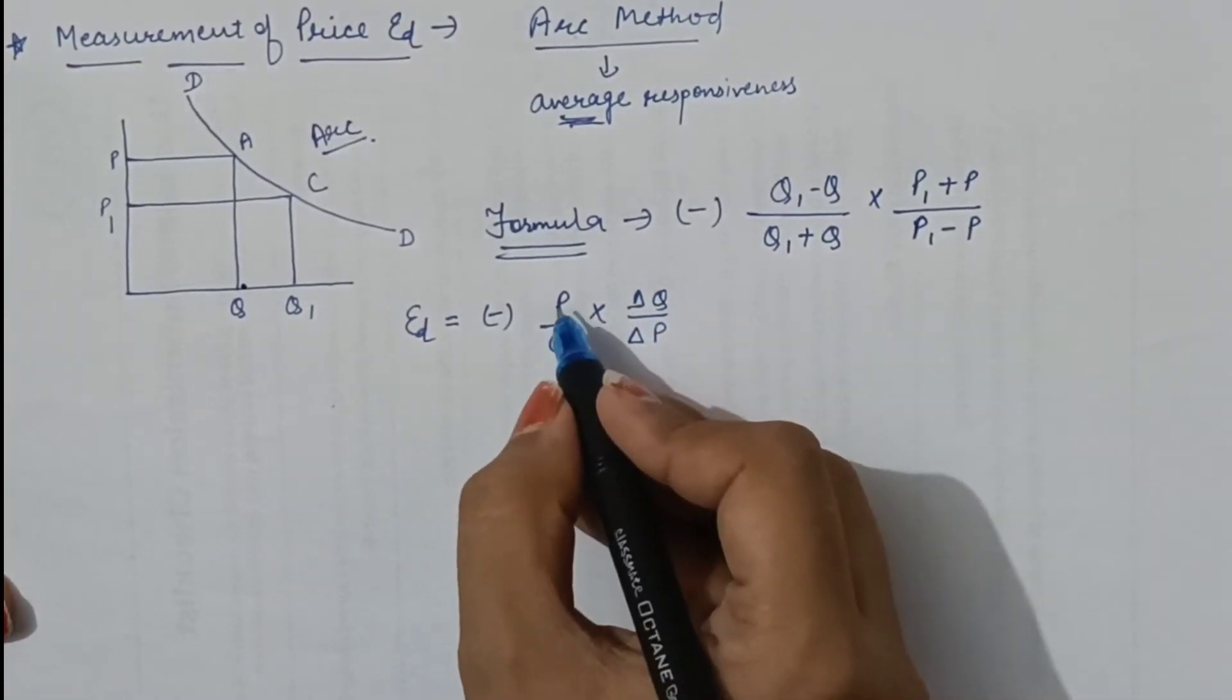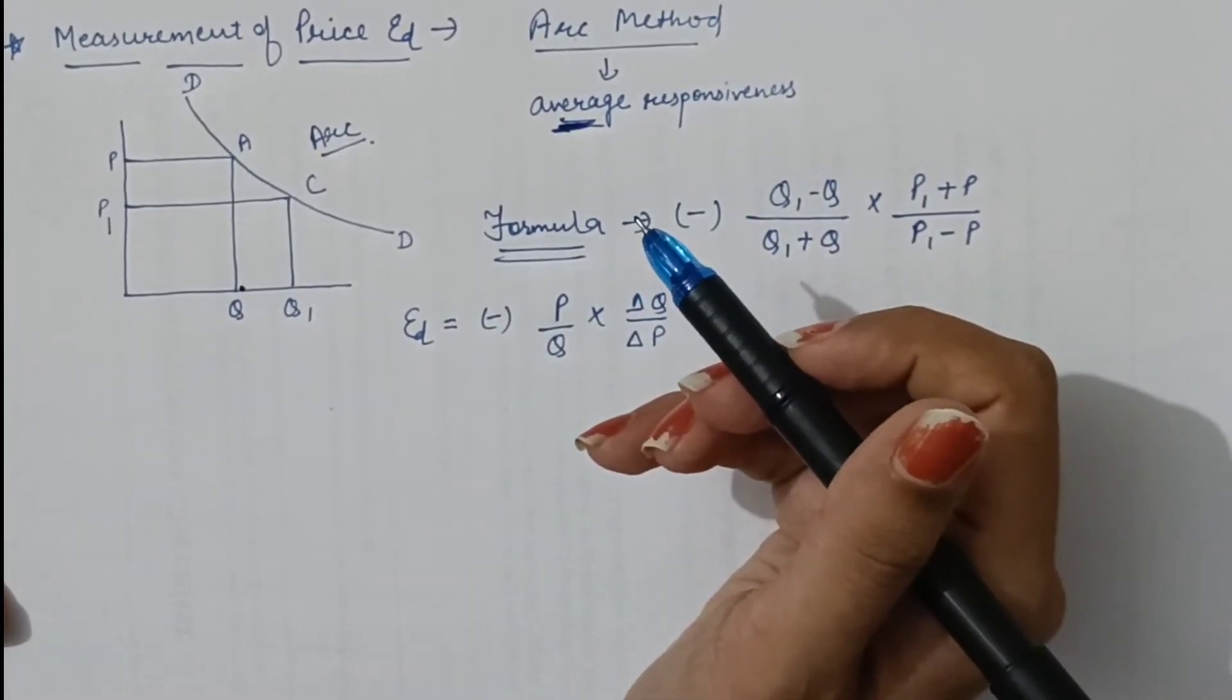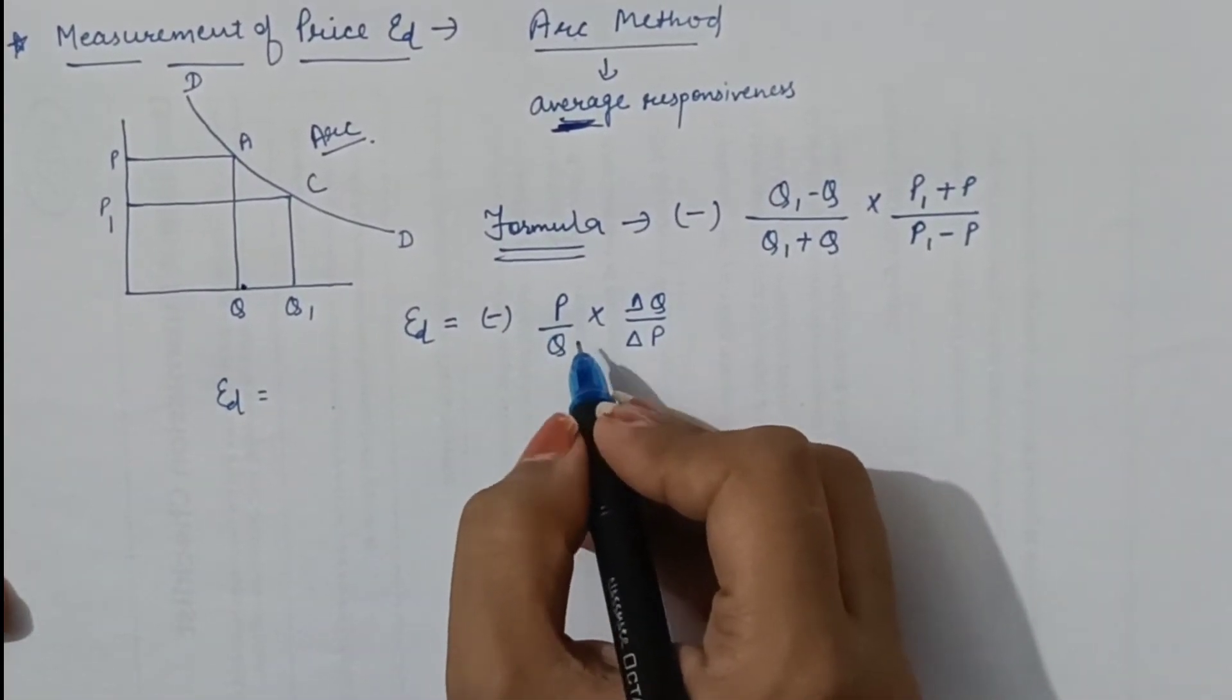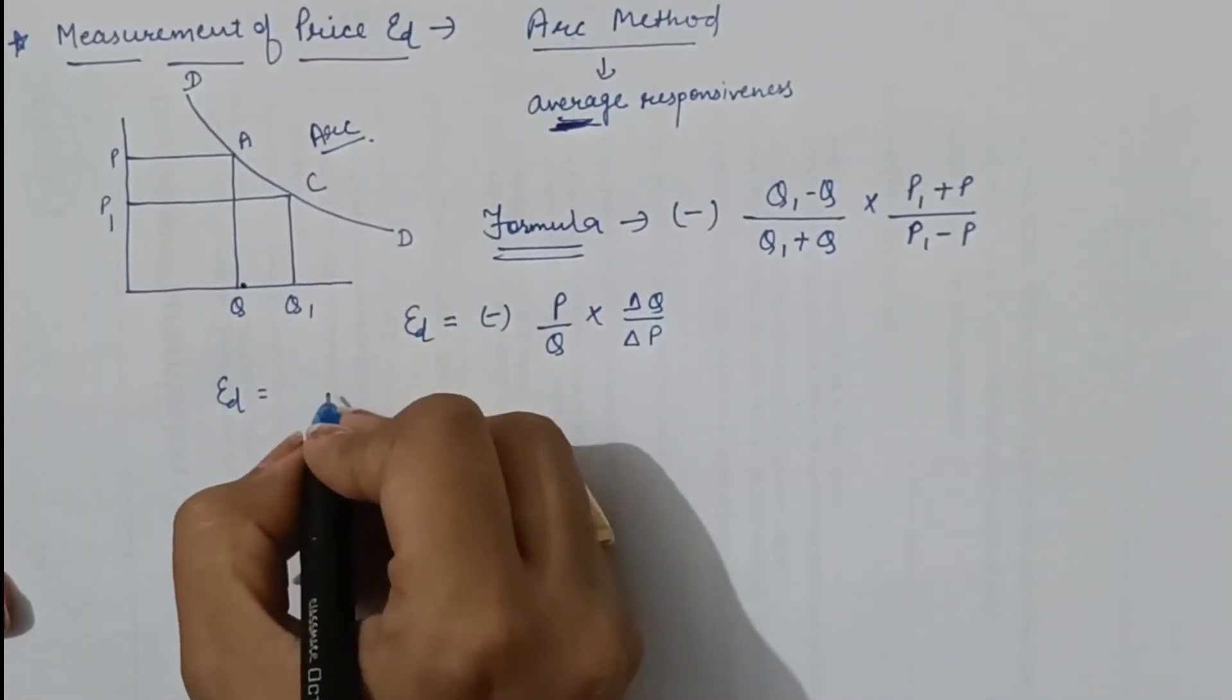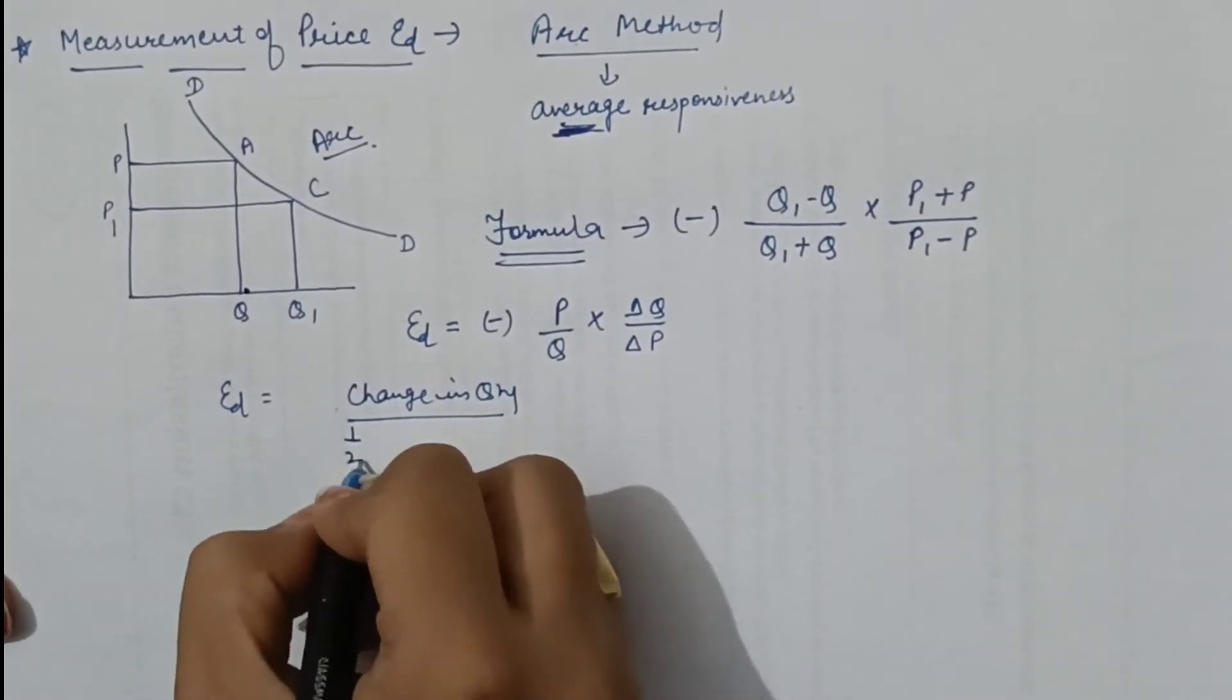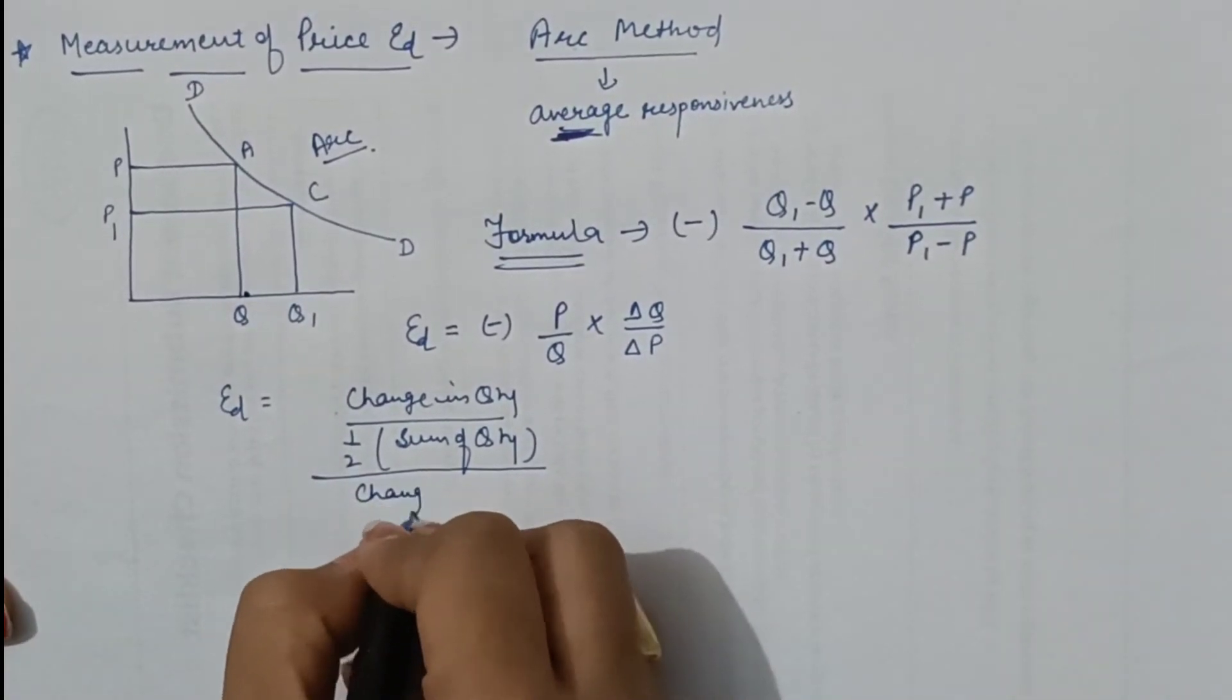But if we take initial price or initial quantity, then we have to take the average of the prices. So our formula would be: change in quantity divided by half of sum of quantities, divided by change in price.